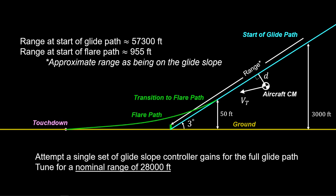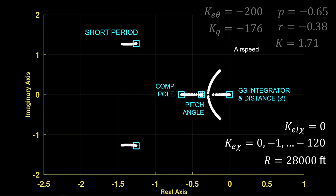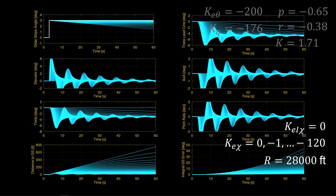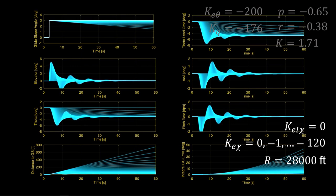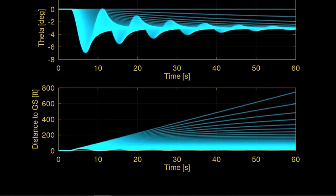As the proportional gain in the glide slope loop becomes more negative, we observe the normal glide slope distance pole move leftward off the origin. This is good because it indicates the distance dynamics are stable so that the aircraft will come to the glide slope. But if the proportional gain becomes too large, the distance pole becomes part of a complex pair, so that the aircraft will oscillate around the commanded glide slope. You can see this oscillation in the time domain linear simulation where a three-degree change was commanded — the response becomes increasingly underdamped.